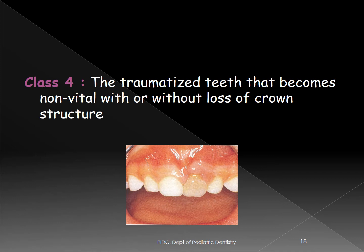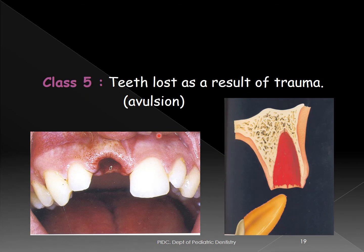Class V is a tooth lost as a result of trauma — that is, avulsion. Avulsion means the tooth has completely come out of its socket.